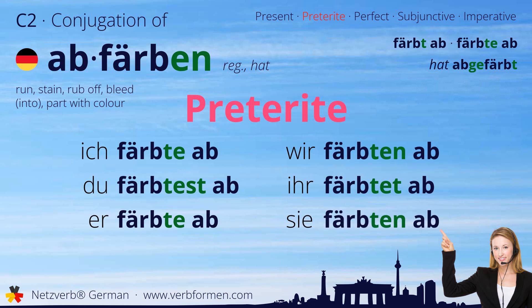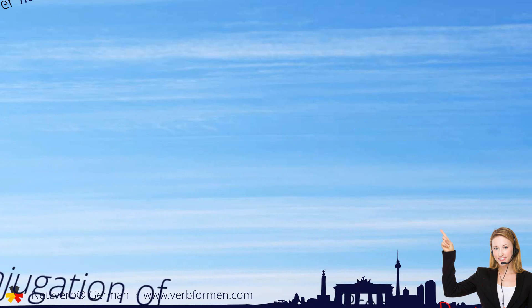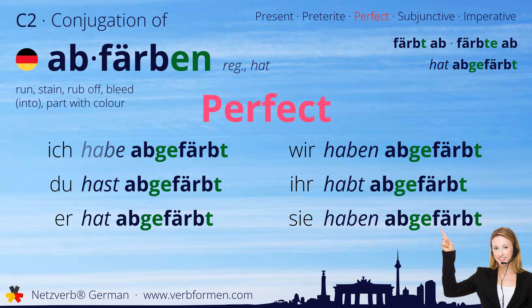Let's continue with the present perfect. Ich habe abgefärbt. Du hast abgefärbt. Er hat abgefärbt. Wir haben abgefärbt. Ihr habt abgefärbt. Sie haben abgefärbt.